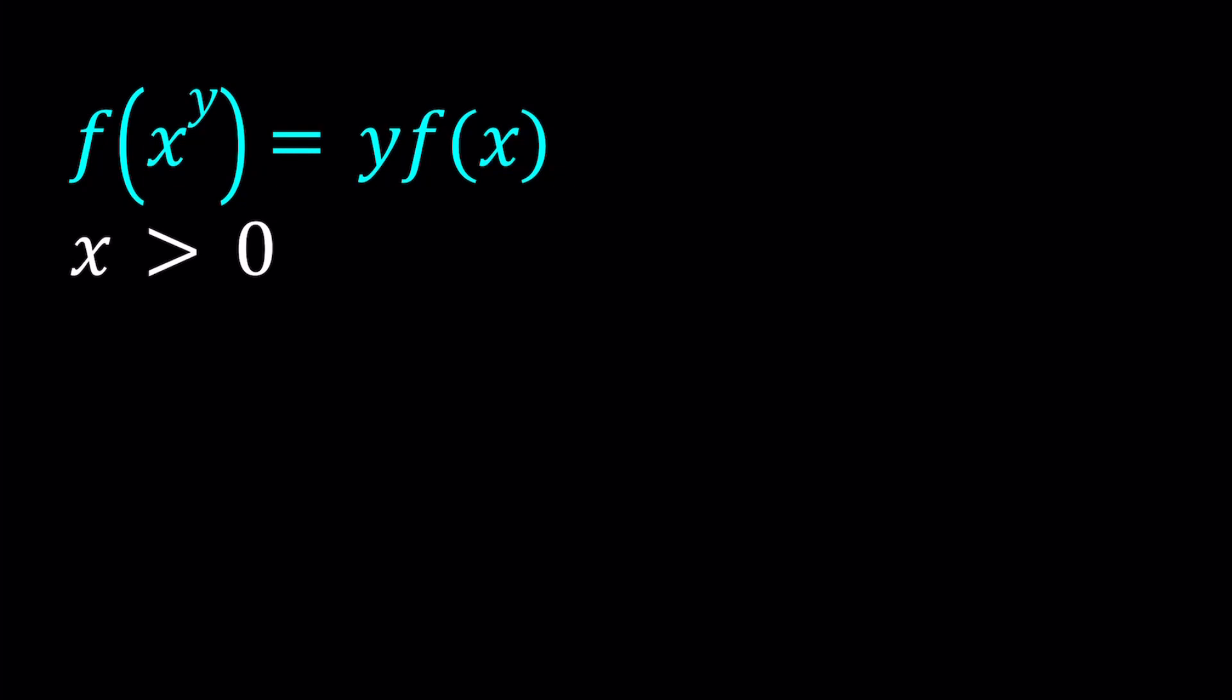Anyways, x is positive, we have f of x to the power y equals y times f of x, and f is also continuous. So it's given that f is continuous, and we're going to be solving for f.